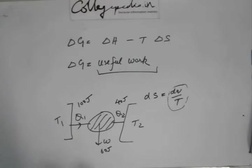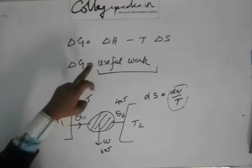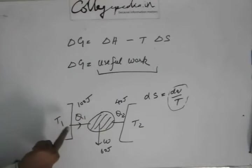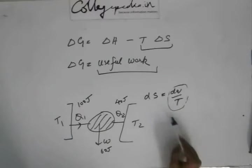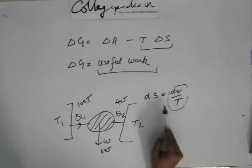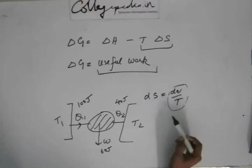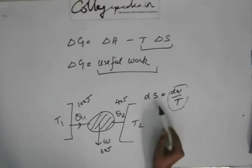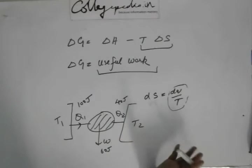Now you see, delta H is the amount of heat given to the system. Now delta H is like Q1, and this T delta S from the basic definition of entropy dS equals dQ by T. So T dS is dQ. So T delta S is delta Q. Delta Q is the heat lost by the system in order to increase the entropy. So this dQ is actually Q2, which is lost by the system.